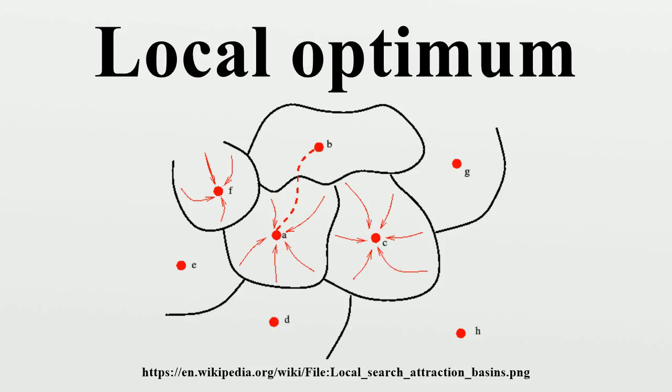A trajectory in search space is generated, which maps an initial point to a local optimum, where local search is stuck. The search space is therefore subdivided into basins of attraction.